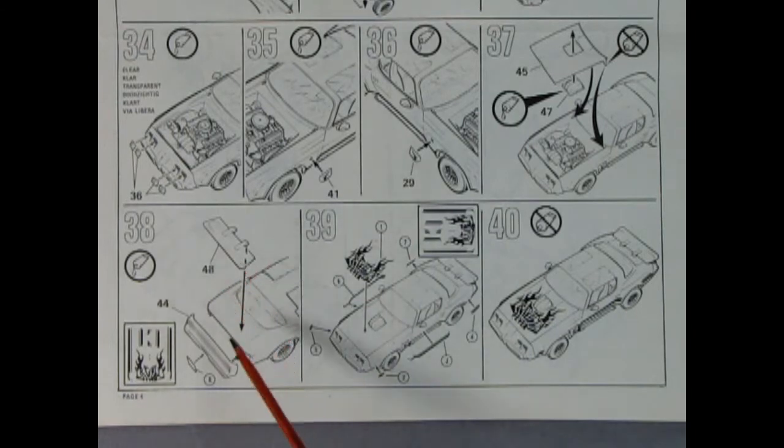Panel 38 shows that whale tail spoiler going onto the trunk lid and our rear bumper. There's the license plate decal there. Panel 39 shows our decals being put onto the car and there's the finished result in panel 40.